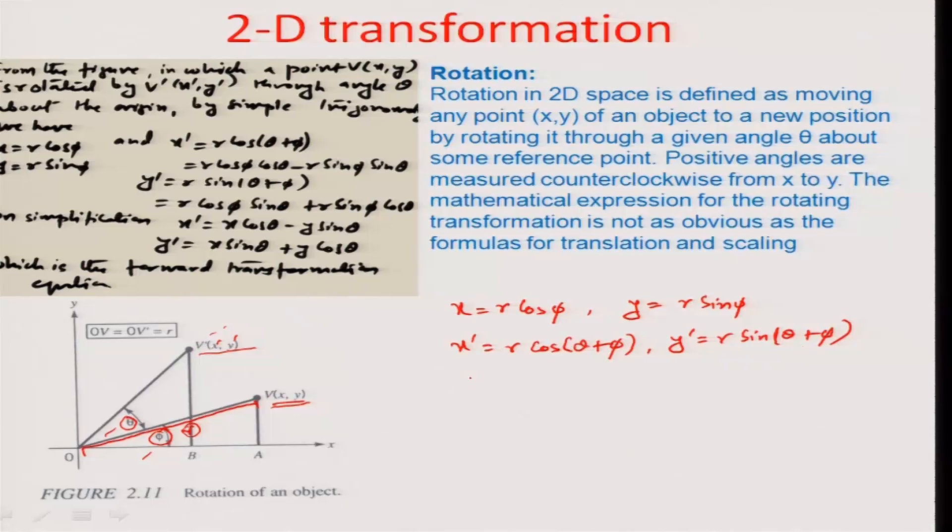If we just expand these expressions we are left with R cos theta cos phi minus R sin theta sin phi, and that is how you express these two equations. Obviously, R cos phi is earlier expressed as x, so I can write it as x cos theta minus R sin phi was y, so y sin theta. And similarly, here we can represent it as x sin theta plus y cos theta.